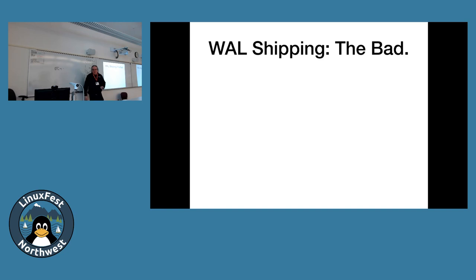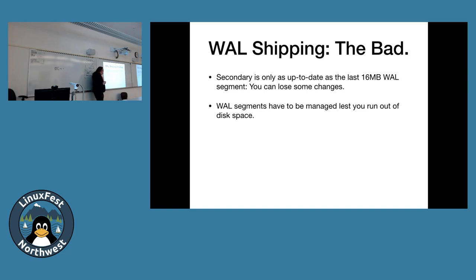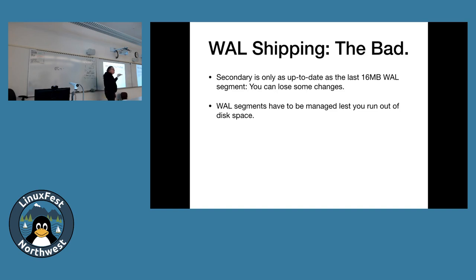Nothing's perfect, so here's the bad stuff. The secondary is only as up to date as the last 16-megabyte WAL segment shipped. If you're at 16 megabytes minus one byte and that segment hasn't shipped yet when the primary is destroyed, you've lost all that data forever. You also have to manage these files — they're just files being picked up and copied over. If archive_command starts failing, WAL segments start piling up on the primary. The destination has to be cleaned up too.